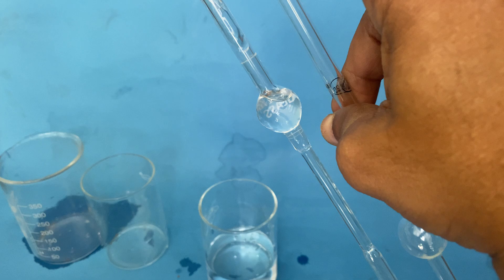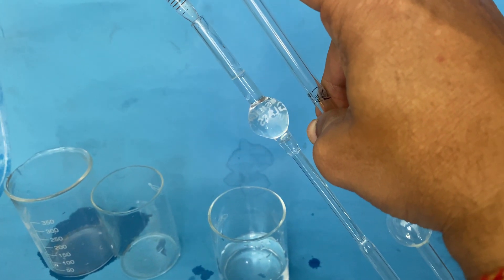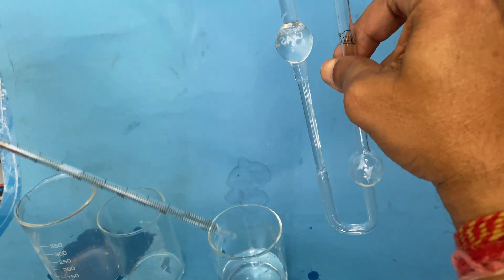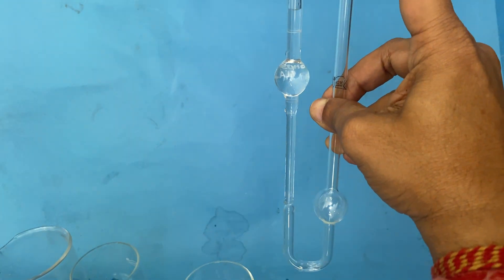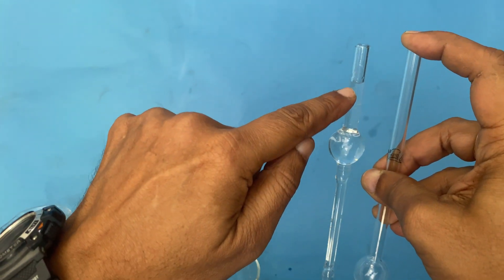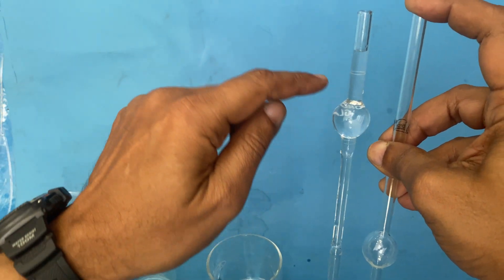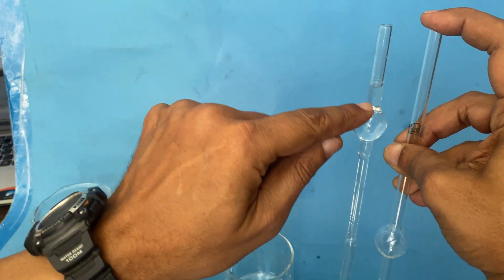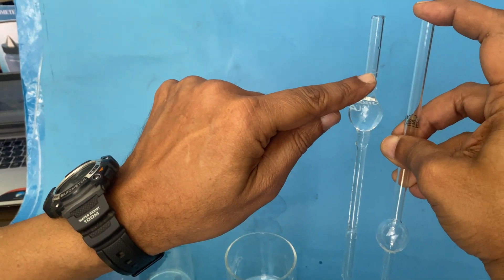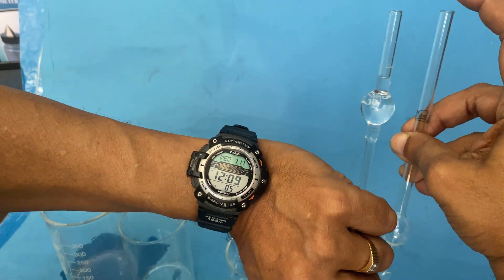Fill it to the bulb. See, this water is coming to the bulb. Just put a drop above the level. Now water is above, a little above. Just open this and close it. Now when this water is here, I start the stopwatch to calculate how much time it takes.